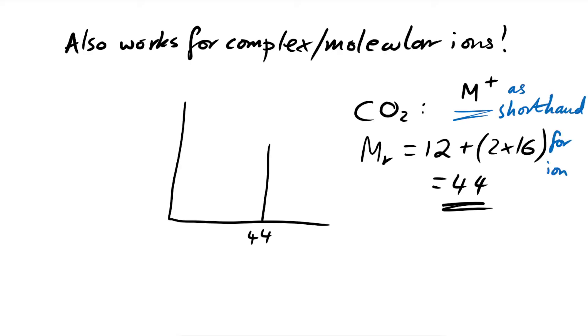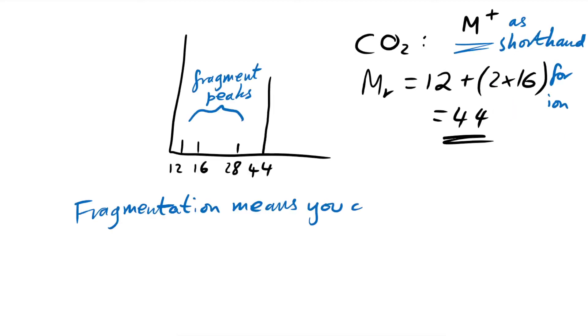However, what's weird is that we can actually end up with some other peaks as well. So let's say that we can have one at 12, we can have one at 16, one at 28 as well. Hang on a minute, if we put pure CO2 into the mass spectrometer, why on earth do we have other peaks? Well, that's because these are from fragments. Fragmentation means you can end up with parts of the molecule being detected. So not all of the CO2 molecules will stay as CO2 plus as 44, they could split up into different bits.